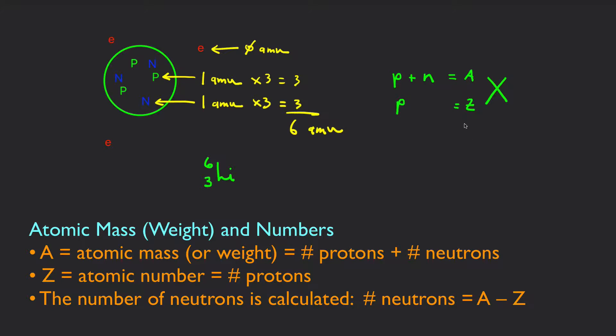How does one calculate the number of neutrons? Logically, protons plus neutrons minus the number of protons is going to equal the number of neutrons. Or put a different way, A minus Z is equal to the number of neutrons.